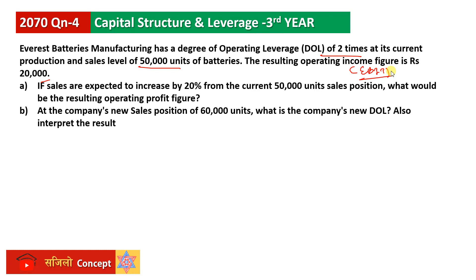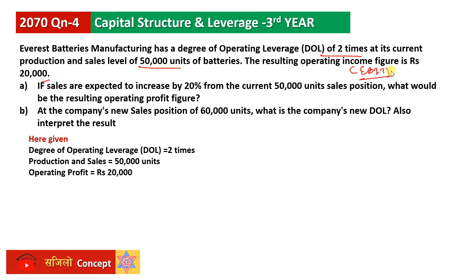The company's new sales position is 60,000 units, and we need to find the company's new degree of operating leverage. The major point to highlight in the solution is the degree of operating leverage. Since the degree of operating leverage is given as 2 times, and production and sales is 50,000 units, EBIT is 20,000.